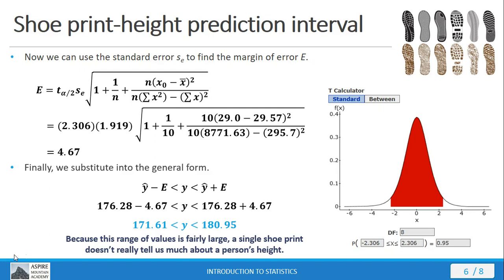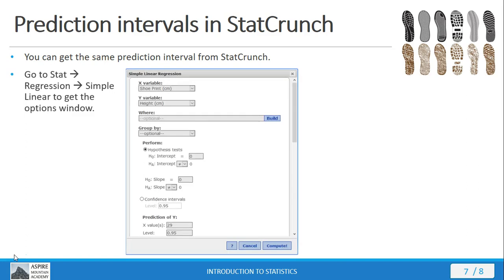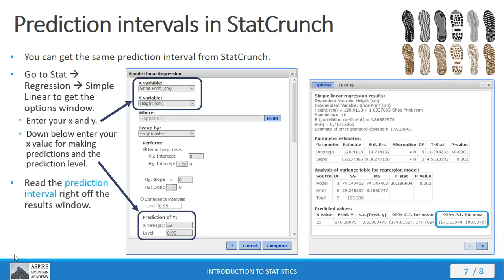The easy way to get this is in StatCrunch. Let me show you really quick how to do this. Go to Stat, Regression, Simple Linear. Then your options window appears. You're going to select your X and Y variables at the top. And then after you selected the X and Y variables here, go down here to this area called Prediction of Y, put in the 29, put in your confidence level of 95%. And in the results window, there's your prediction interval there on the right. Notice we're getting the same numbers out. And that's all there is to it.